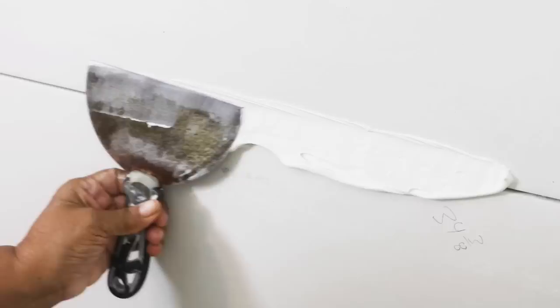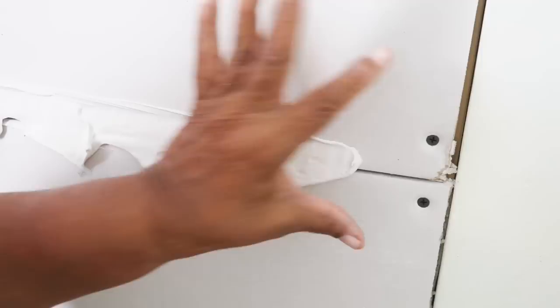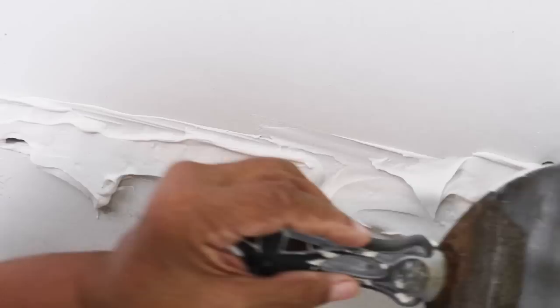I've loaded up my knife here and I'm just going to lay it on. You don't want too wide of a band to start with your bedding coat. You've just got this little indentation here that you want to fill up. I take my knife and I'm just going to graze across lightly.